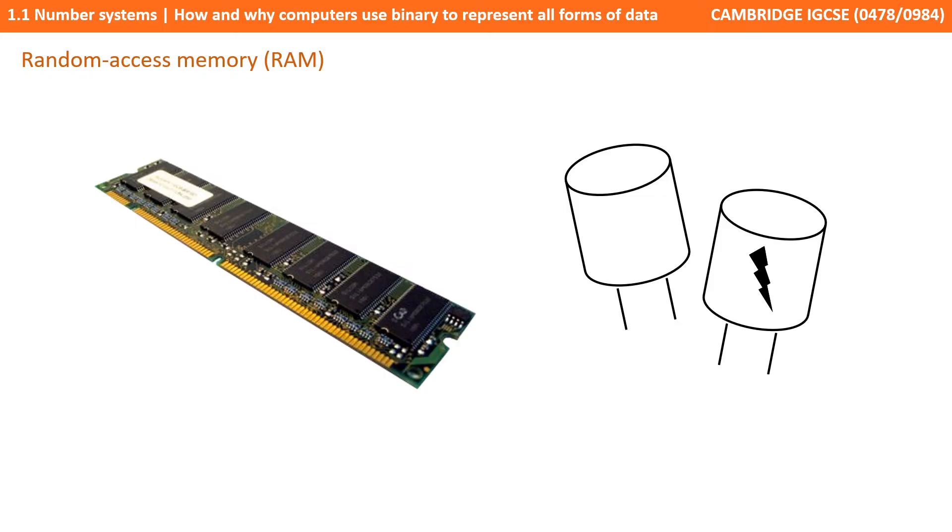For example in RAM data can be represented with capacitors. They either hold a charge, 1, or they don't hold a charge, 0. Having further states would make the components more difficult to build and potentially more prone to error.